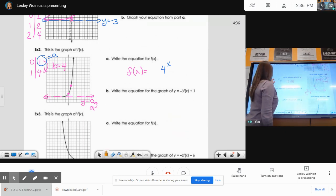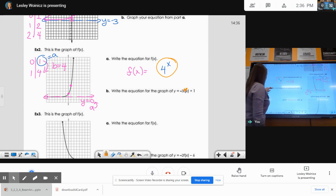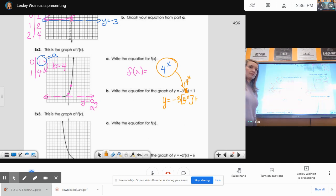Okay, now I have something that's equal to f of x. I'm going to replace f of x with 4 to the x right here. So it's going to be y equals negative 3 times 4 to the x. And I'm finished.